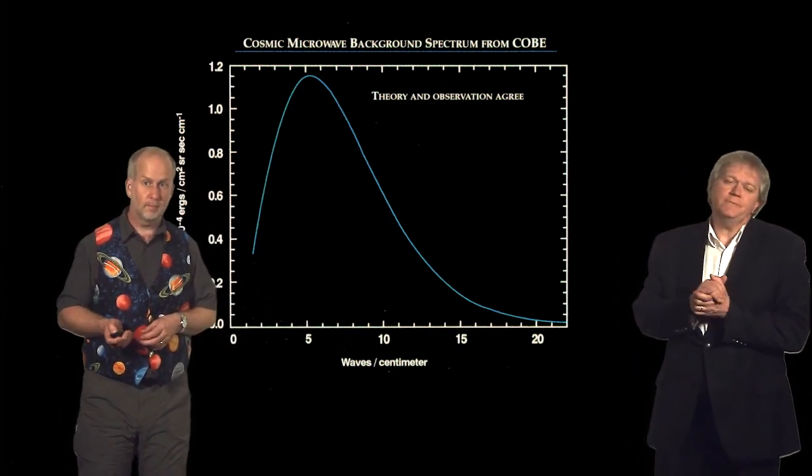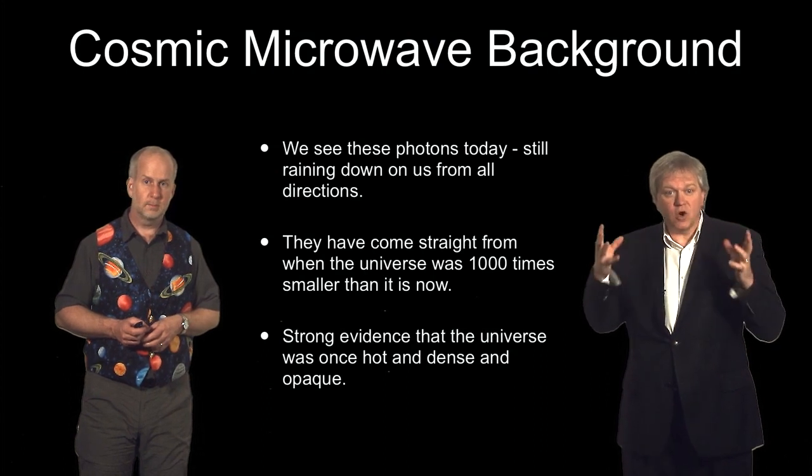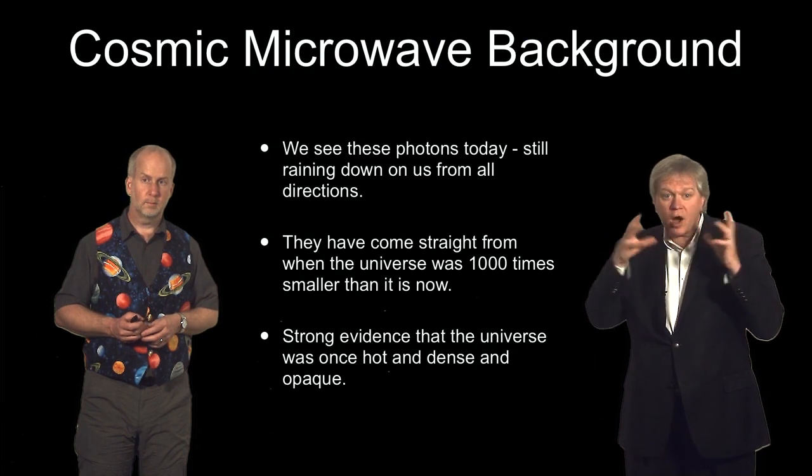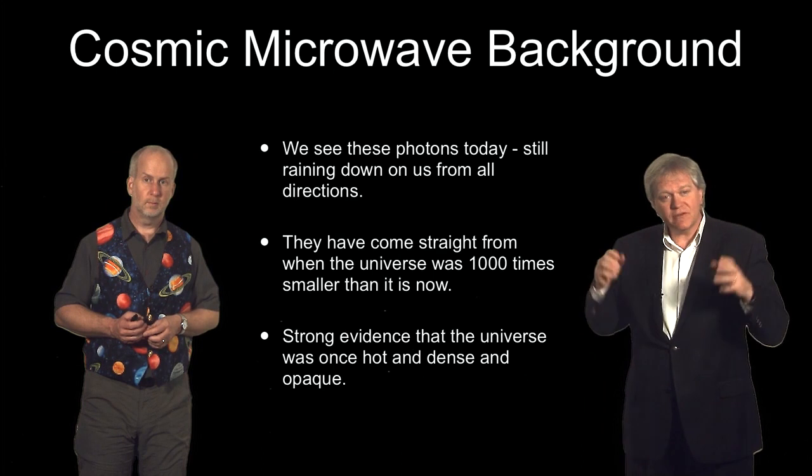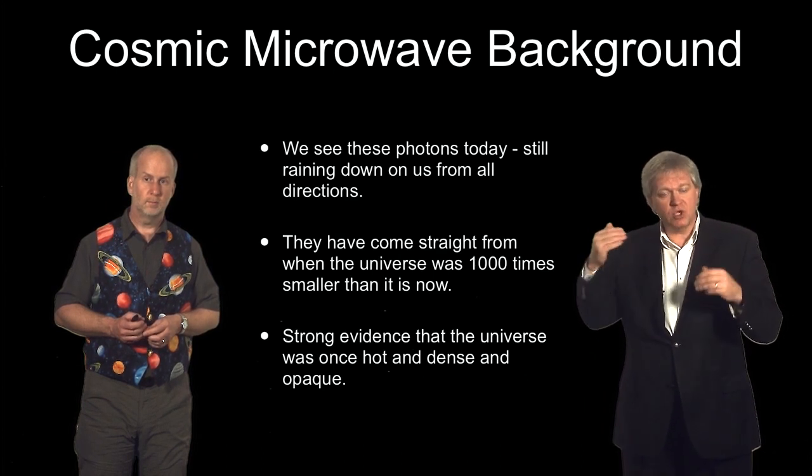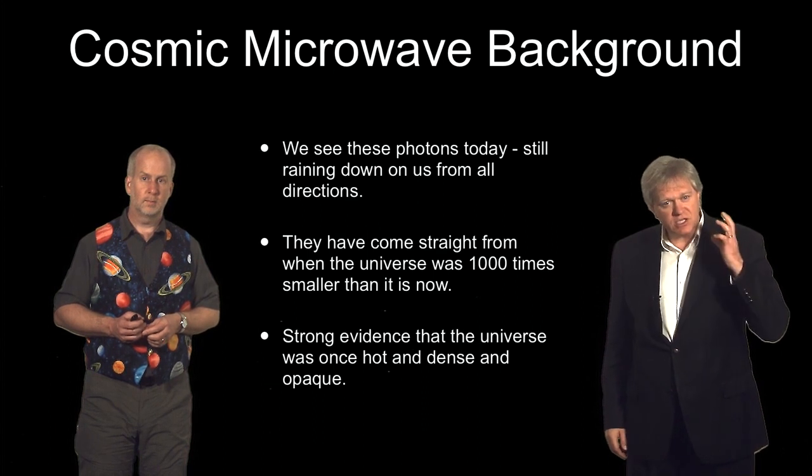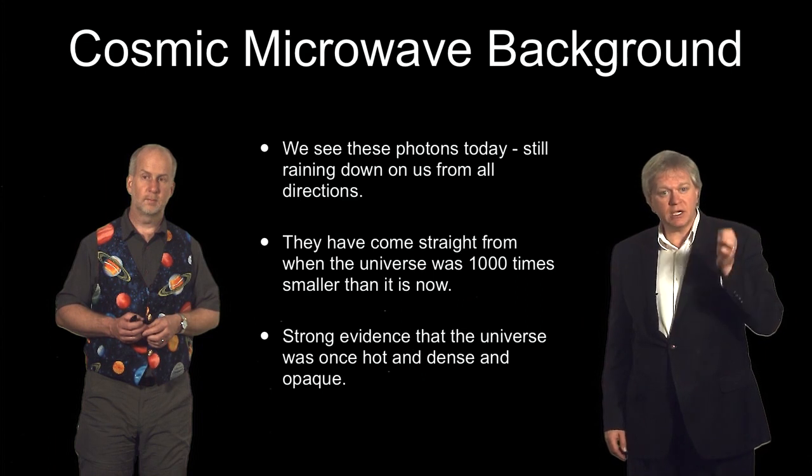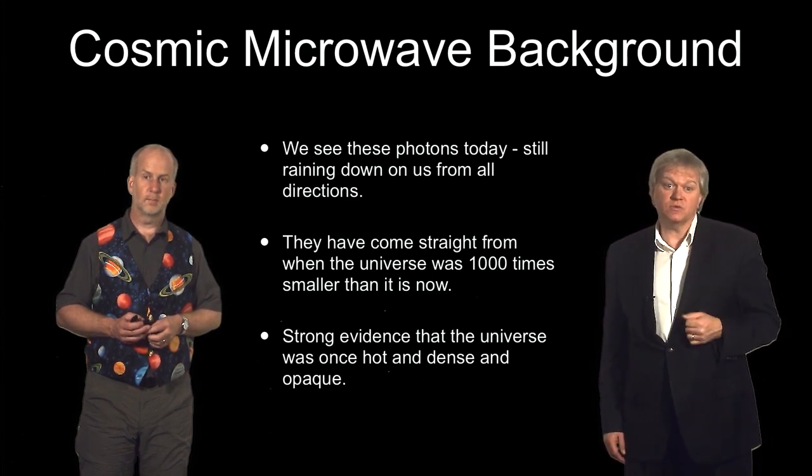So in summary, the cosmic microwave background is the photons left over from the Big Bang when the universe was foggy, full of electrons and photons scattered around. They have come straight to us from when the universe was 1,000 times smaller than it is today. And they provide this very strong evidence that the universe was once hot, dense, and opaque, something any decent theory that describes the universe is going to have to explain.